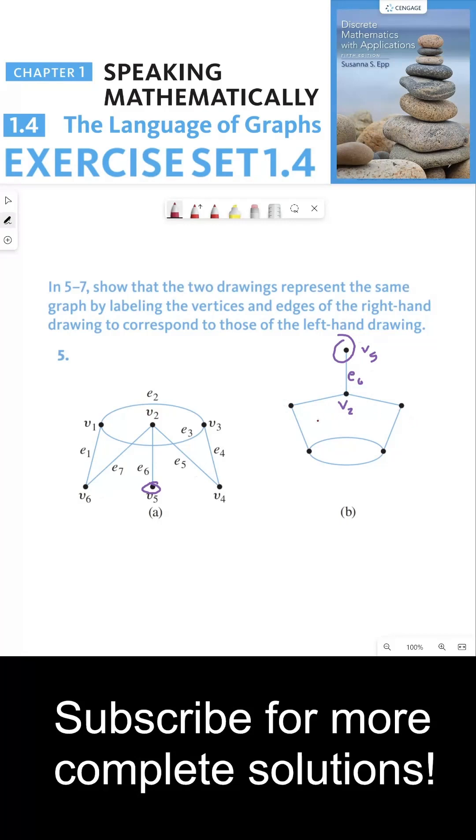So these two vertices over here must be v4 and v6, and it doesn't matter which one you pick so long as your choices for the edges are consistent with the vertices.